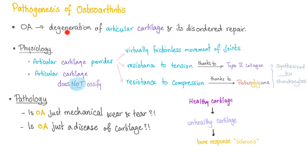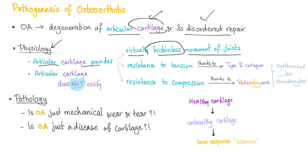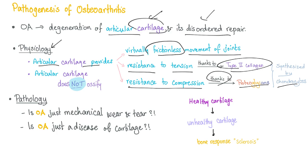Pathogenesis of osteoarthritis: osteoarthritis is a degeneration of articular cartilage and its disordered repair. The cartilage is gone and you cannot repair it. To understand any pathology, first let's understand the physiology. Articular cartilage provides virtually frictionless movement of the joint. Resistance to tension — thanks to type 2 collagen, made by chondrocytes. Resistance to compression — thanks to proteoglycans, also made by chondrocytes. Normally, the articular cartilage does not ossify.